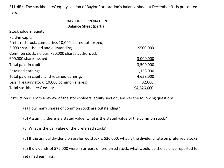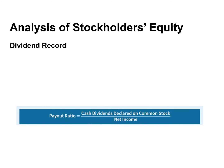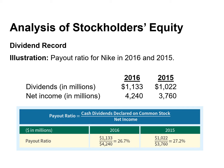Make sure you take the time to understand how to solve this exercise. The solutions will be provided in another document. Investors are interested in both the company's dividend record as well as its earnings performance. One way that companies reward stock investors is to pay them dividends. The payout ratio measures the percentage of earnings a company distributes in the form of cash dividends to common stockholders. It is computed by dividing total cash dividends declared to common shareholders by net income. The payout ratio for Nike is 26.7% in 2016 and 27.2% in 2015, remaining relatively constant at approximately 27%.